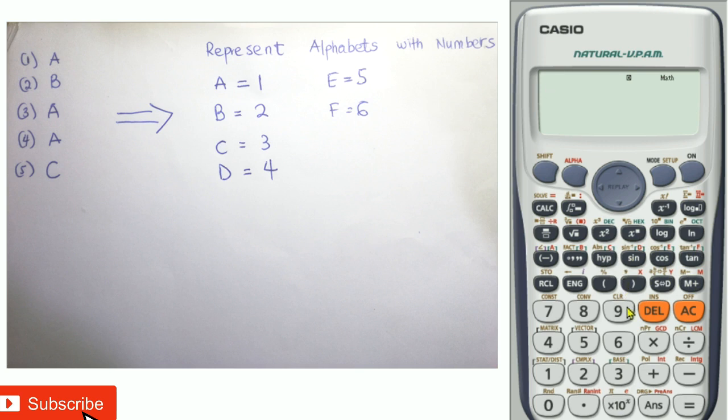So to store our objective answers, we have to represent every alphabet in the answers with a number. So A represents 1, B represents 2, C represents 3, D represents 4, E represents 5, F represents 6, and so on.